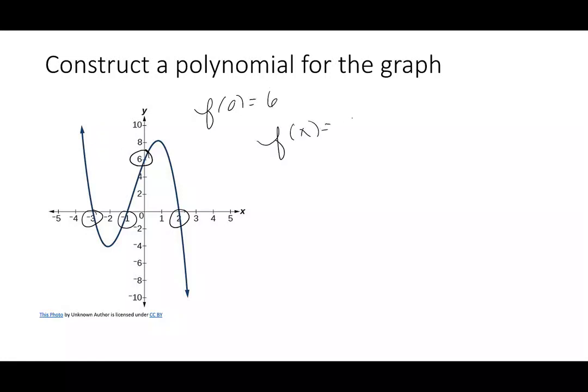And how I'm going to figure that out is I will use the y-intercept of f(0) as positive 6, and that's going to help me find that leading coefficient. So we'll start by saying f(x) is going to look like a times (x plus 3), (x plus 1), and (x minus 2). Let's put the 0 in. So f(0) is a times (0 plus 3), (0 plus 1), (0 minus 2), and that's supposed to be a positive 6.